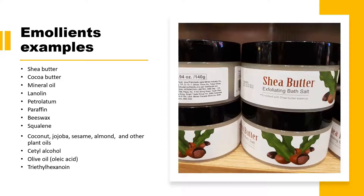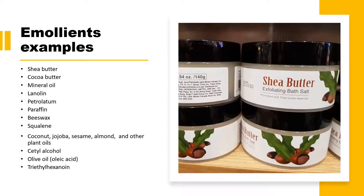Additionally, various oils such as coconut oil, jojoba oil, sesame oil, almond oil, and other plant oils are used. Various alcohols like cetyl alcohol, olive oil, and triethylhexanoin are also widely used in different kinds of moisturizing creams. These are examples of different emollients derived from plant sources, animal sources, and synthetic sources, which are widely used in commercial cream preparations.